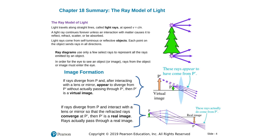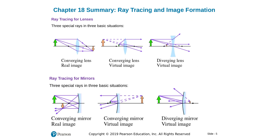Images form when rays or their extensions combine and then come to our eyes. If the extensions of rays combine, we have a virtual image. If the rays themselves combine, we have a real image. Those rays must come to our eyes for us to see them. We have special rays for mirrors and lenses to do ray tracing and determine where the image is and whether it is real or virtual.